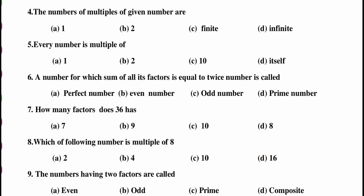Question number 9: numbers having exactly 2 factors are called — even, odd, prime, or composite? We know that a prime number has only 2 factors: 1 and the number itself. So the answer is prime.